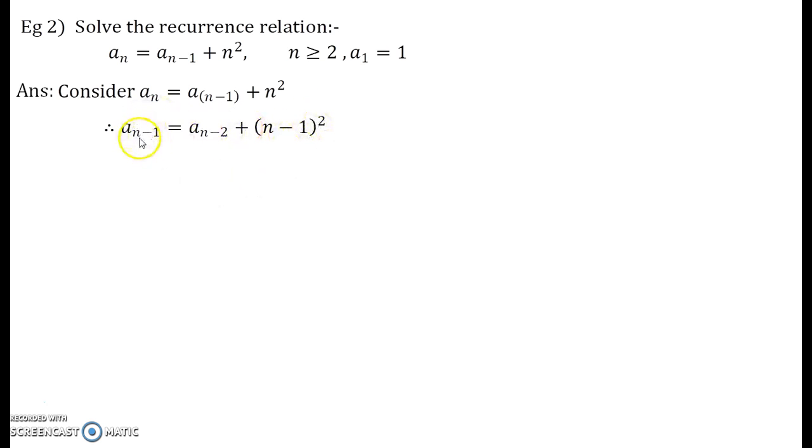Now again, you replace n by n minus 1 in this newest equation that we have got. So, what you get is an minus 2 equals to an minus 3 plus n minus 2 the whole square. Now again, you replace n by n minus 1 in this newest equation. So, you get an minus 3 equals to an minus 4 plus n minus 3 the whole square.